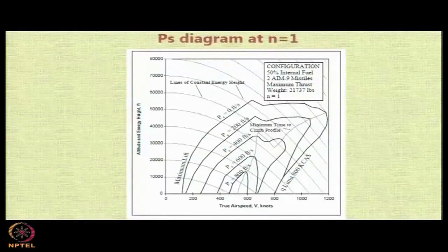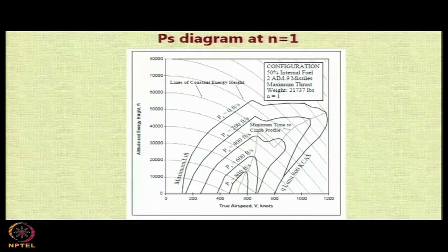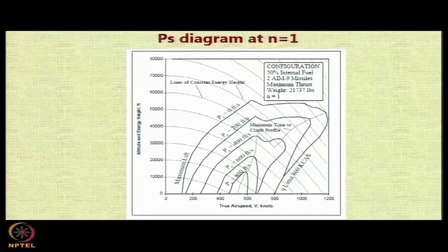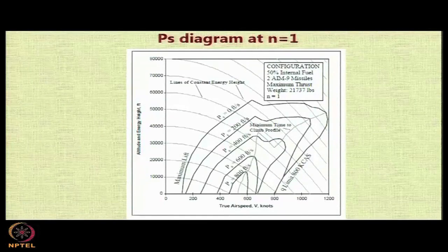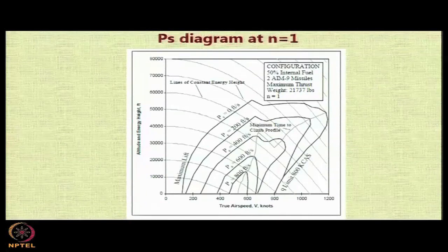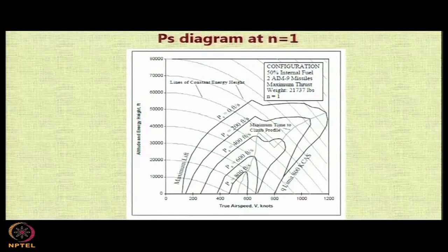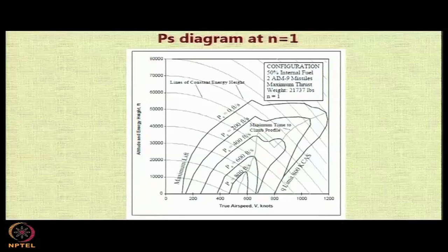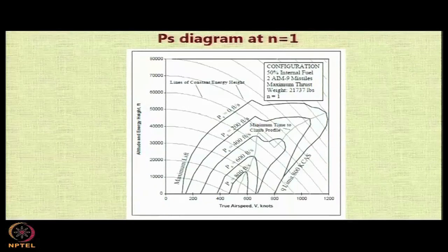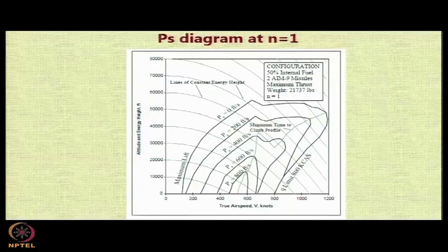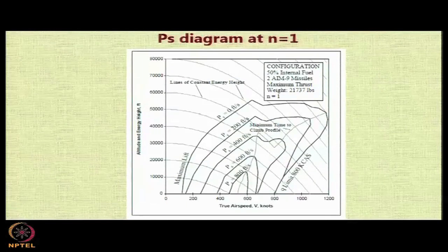Using this expression, one can actually draw a diagram like this for various values of Ps. This particular diagram is a Ps diagram at n equal to 1, and it kind of gives you some maneuver limit that the aircraft has. We will come back to this in more detail a little bit later.